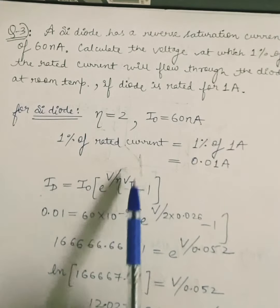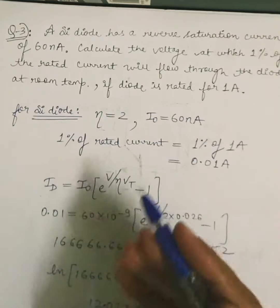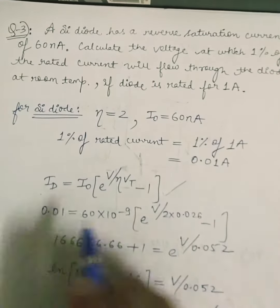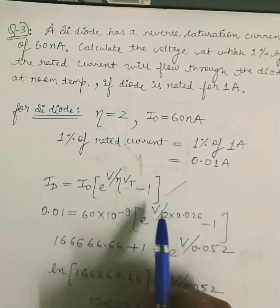Now we have to only find by calculating the voltage. So we will calculate the voltage by putting it into this equation which is Id equals I0 e to the power V upon eta Vt minus 1.